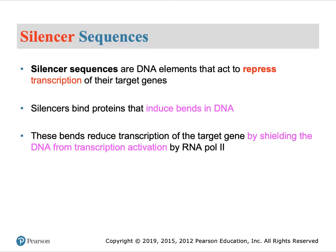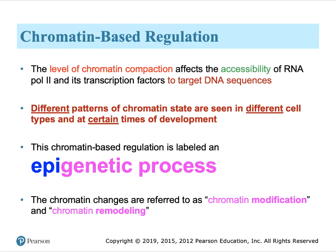Silencer sequences work by binding their own factors, which somehow interfere with pre-initiation complex formation, thus reducing or eliminating levels of transcription for a particular gene. Beyond binding of factors, there is a higher level of regulation depending on the state in which DNA is wound around itself, called compaction. If DNA is loosely packed, it is more accessible to factors than DNA tightly packed around its chromatin structure. This level of control is known as epigenetic, which translates to 'above the genome.' We will discuss this at a later point.